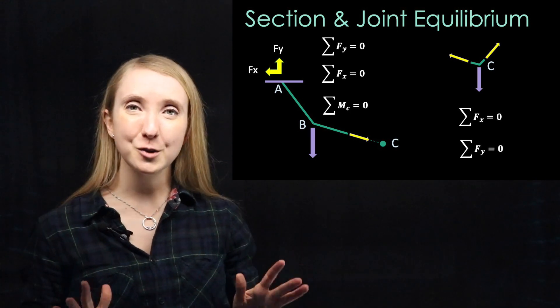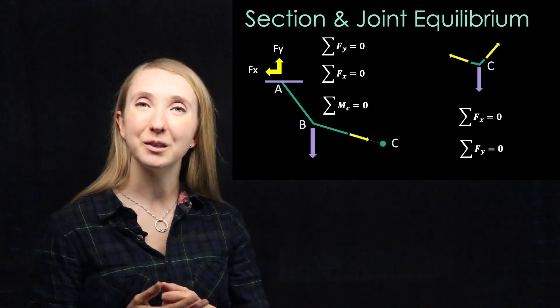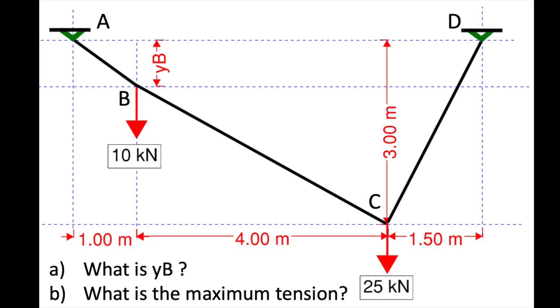Let's see these factoids in action to solve a problem. Here we have a cable hung from points A and B which are at the same elevation. There are two point loads being applied, 10 kilonewtons at point B and 25 kilonewtons at point C. We want to know the dimension YB and what the maximum tension in the cable is.